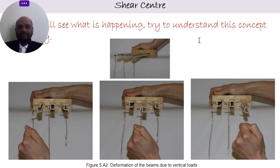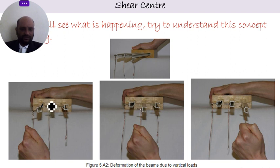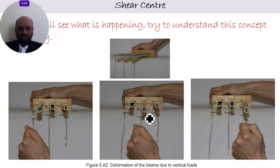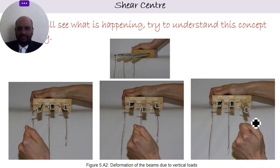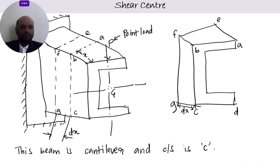If the load is applied at a point not at the shear center, the member twists — for example, anti-clockwise. But if you apply the load at the shear center, there is only bending, no twisting. This point is called the shear center. The load must be applied at the shear center to avoid twisting and achieve pure bending.